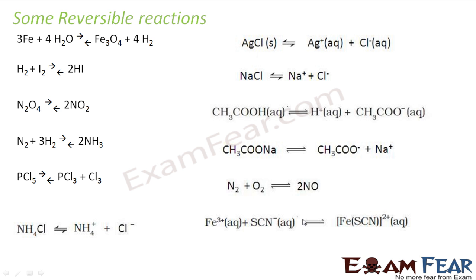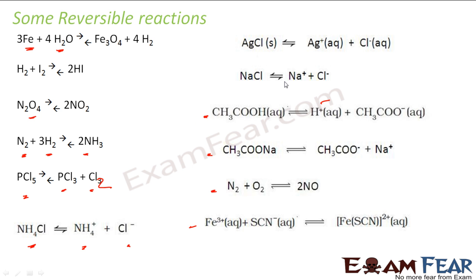Equilibrium exists only for reversible reactions. Some examples include: rusting of iron, H₂ + I₂ ⇌ 2HI, N₂O₄ ⇌ 2NO₂, N₂ + 3H₂ ⇌ 2NH₃ (ammonia synthesis), PCl₅ ⇌ PCl₃ + Cl₂, NH₄Cl decomposition, N₂ + O₂ ⇌ 2NO, CH₃COOH (a weak acid) ⇌ H⁺ + CH₃COO⁻, and HCl also gives a reversible reaction. There are many reversible reactions in chemistry; you only need to know a few to start.